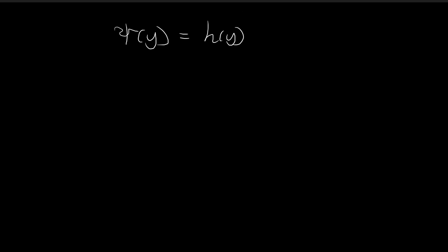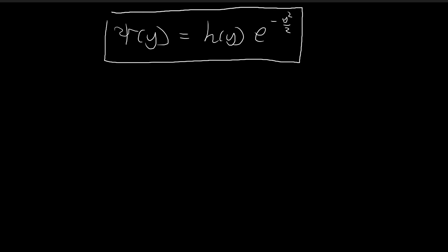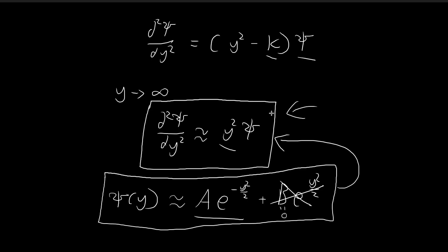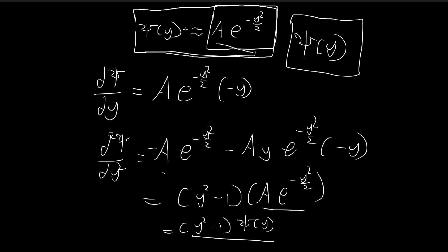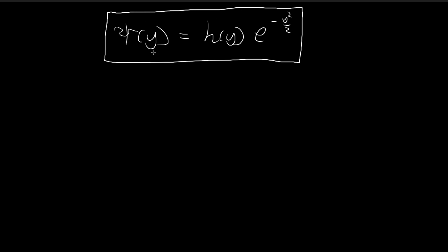For our last step of our guesswork, we're going to propose that xi is equal to a function h of y times e to the power of negative y-squared over 2. We're going to guess that xi is going to be equal to some function times e to the power of negative y-squared over 2. Through all these approximations, we found that as y tends towards infinity, xi is going to behave in a way that resembles this function, and that's why it motivated us to propose this guess and include this e to the power of negative y-squared over 2 term.